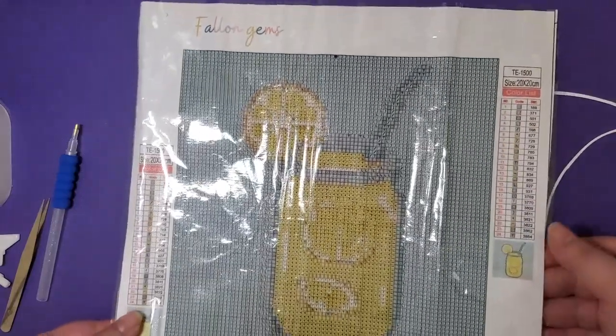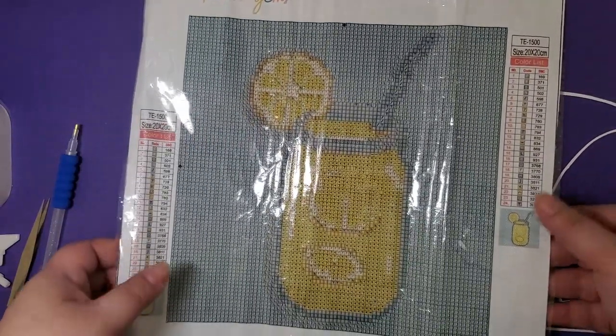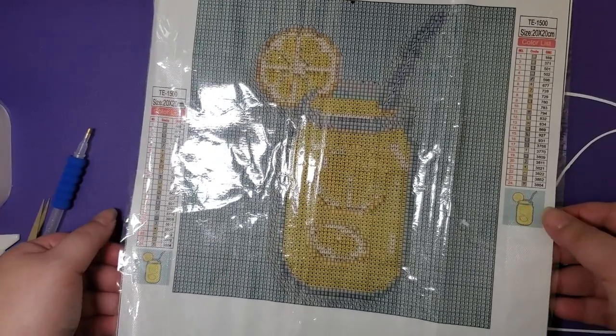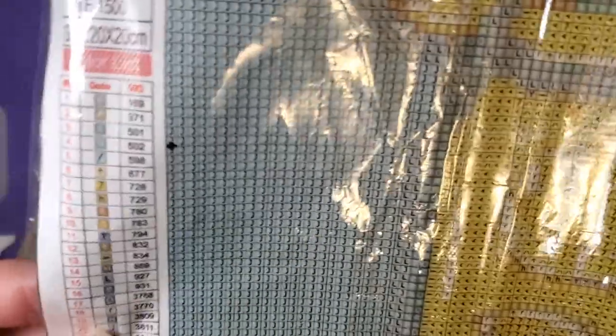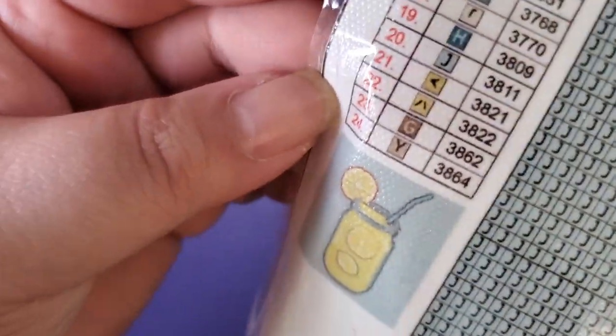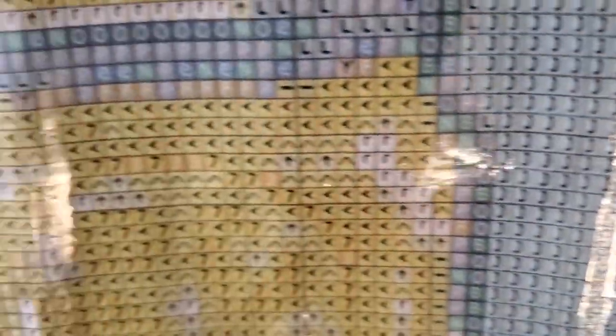This is supposed to be a Glass of Llamanade mini kit. It is a 20 by 20, and we have 24 colors. Here we are, all up in the business. Pretty nice and neat for the symbol clarity.